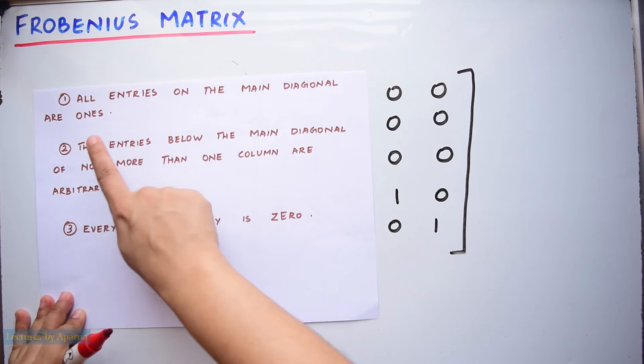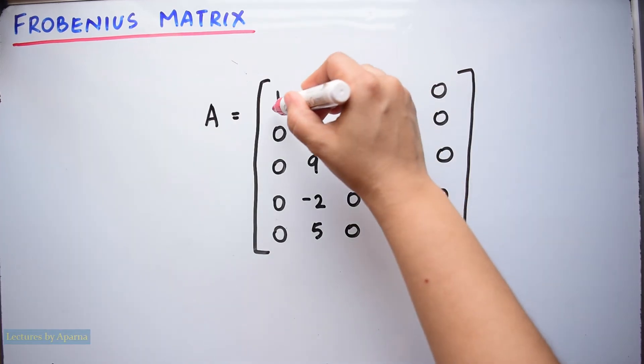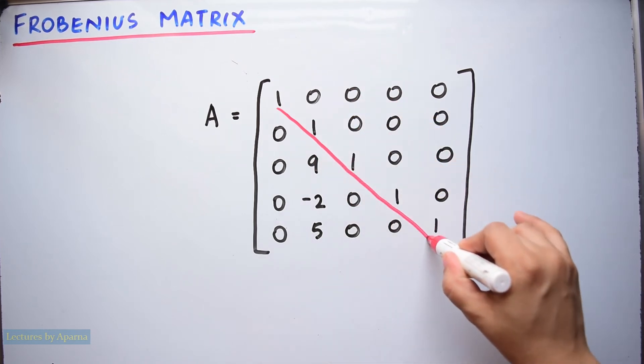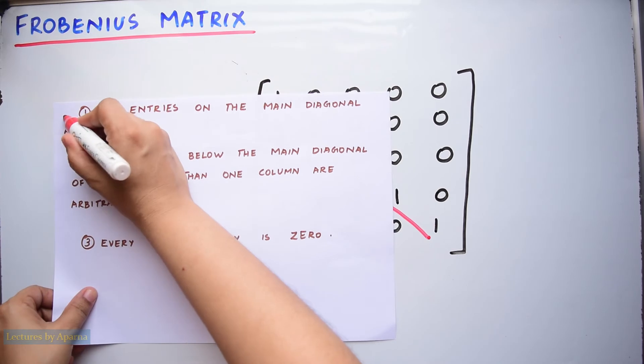First condition is all entries on the main diagonal are ones. So here all elements in the main diagonal are ones. So the first condition is satisfied.